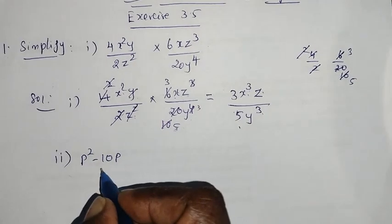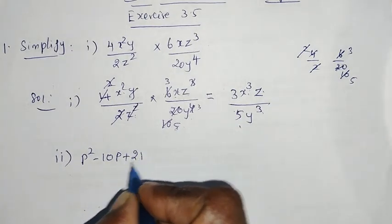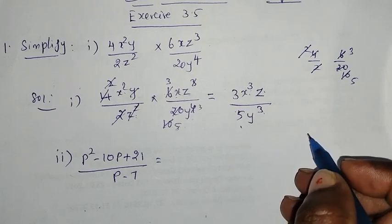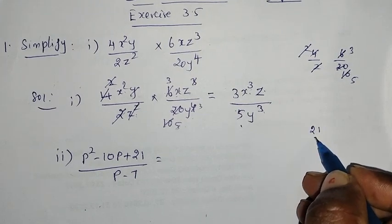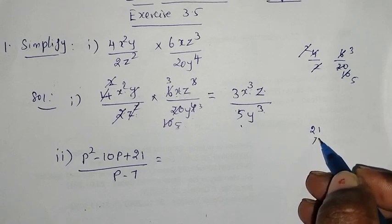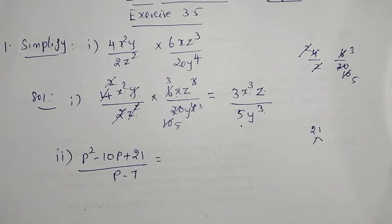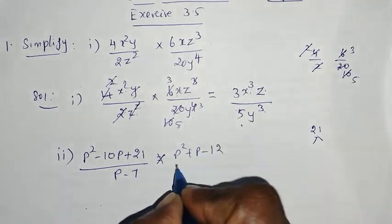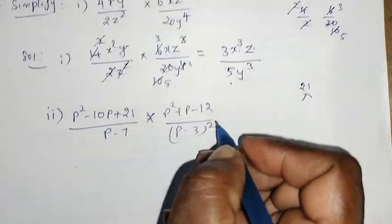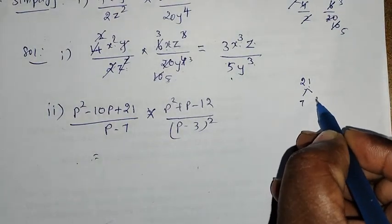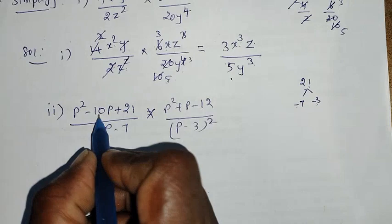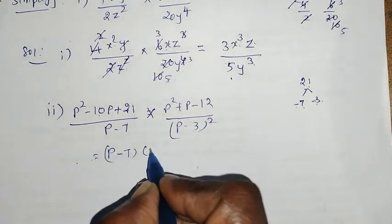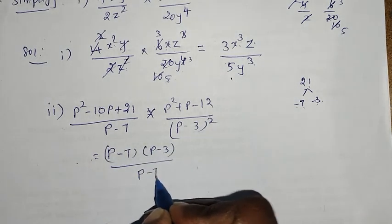Into P squared plus P minus 12 divided by P minus 3 whole square. 21 is split: 7, 3. Minus 7 minus 3 add to minus 10, multiply to plus 21. So P minus 7, P minus 3, divided by P minus 7.